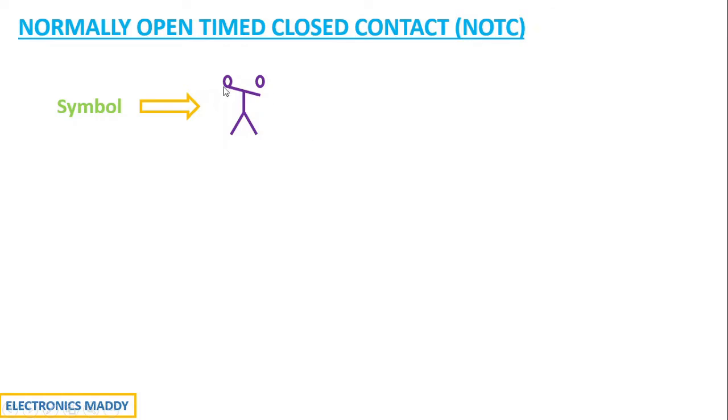You have a slash that means it is actually open—it is not connected to this point. So that means these are normally open contacts initially, and once energy is given to them, there will be a certain time delay.